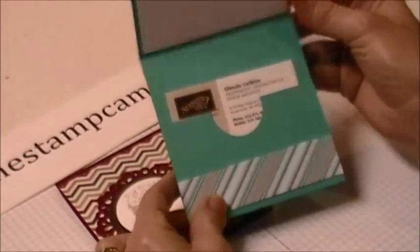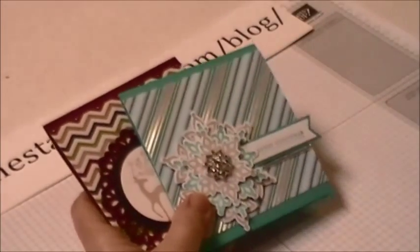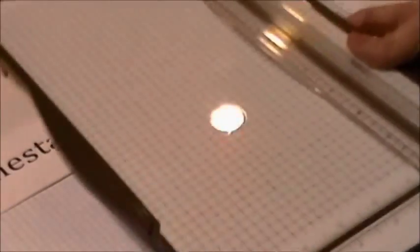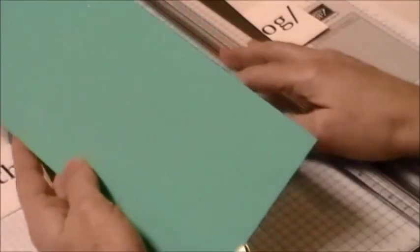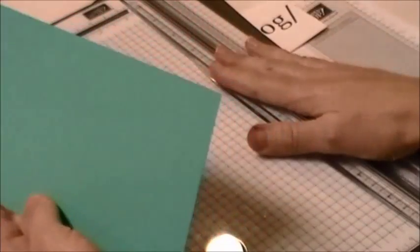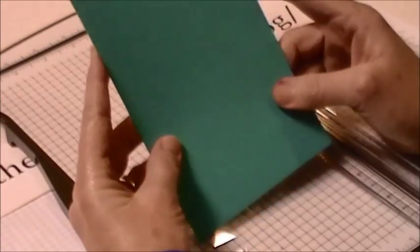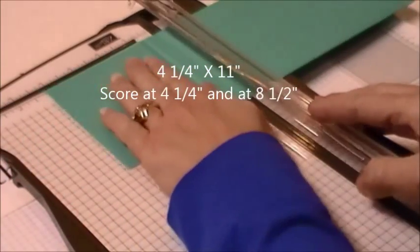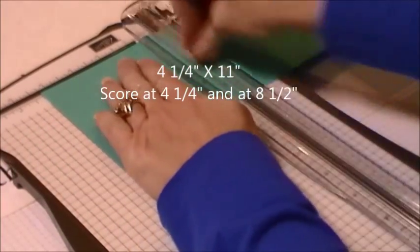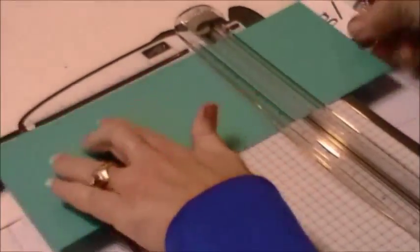To do this you are going to need your cutter and your Simply Scoring Tool or just the Stampin' Up trimmer. You're going to cut your card stock 4¼ by 11, and then you are going to score it at 4¼ and at 8½.